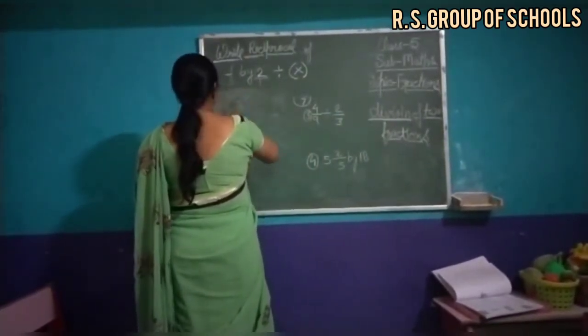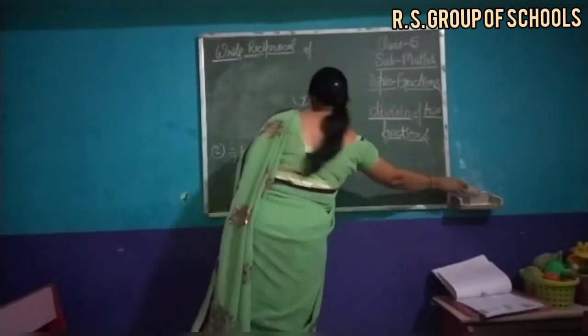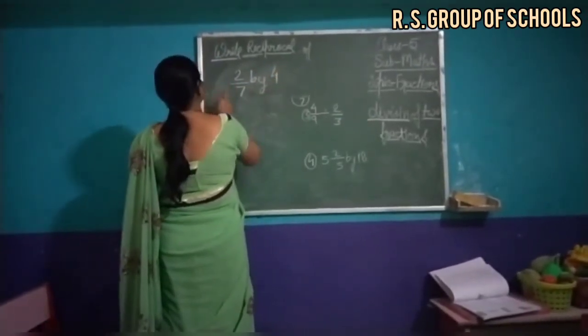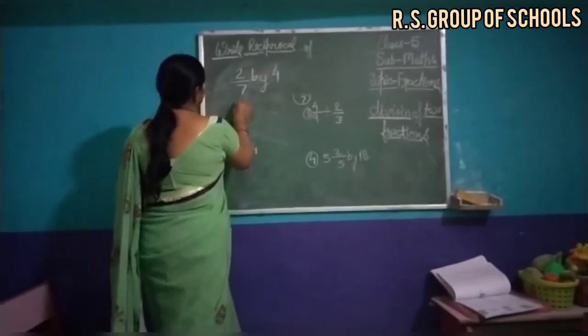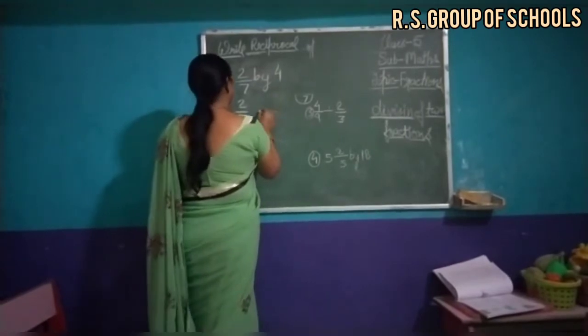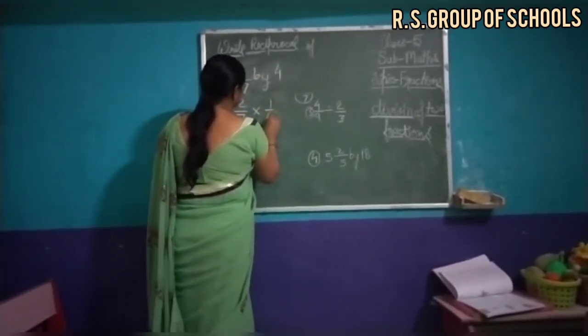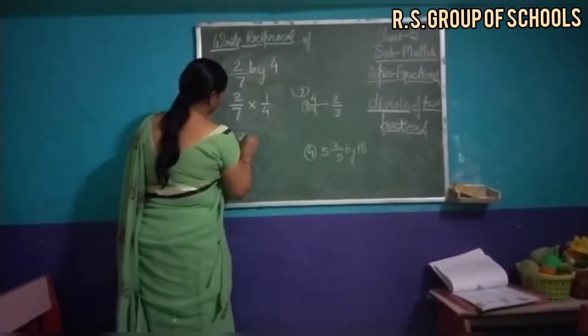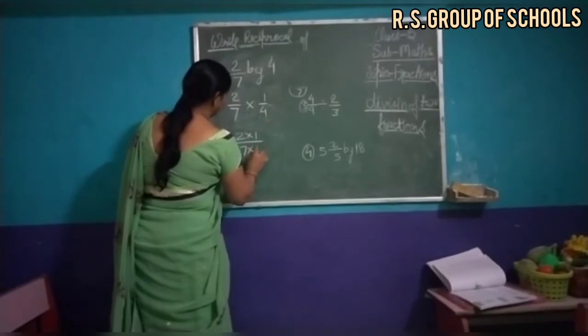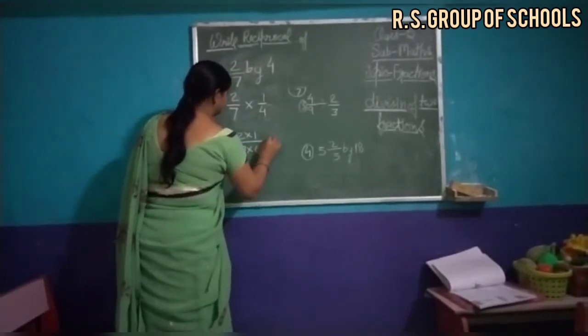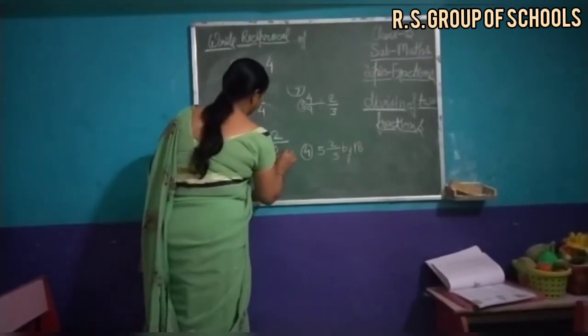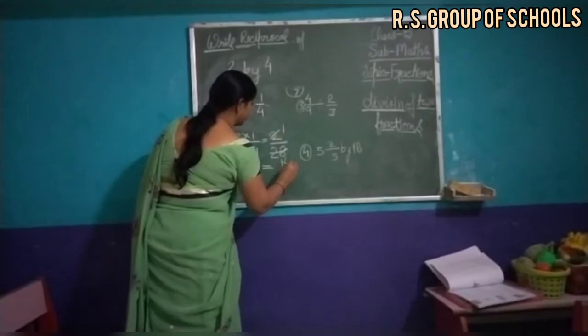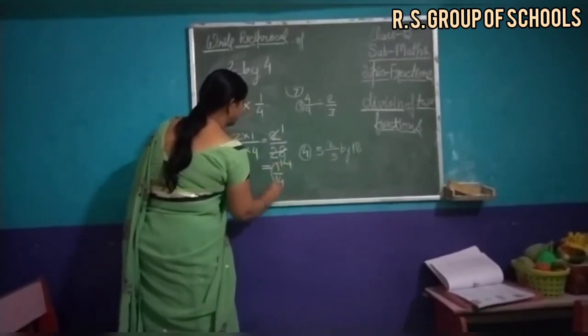Now the second one is 2 upon 7 by 4. Then again 4 को reciprocal करेंगे, 1 upon 4, and sign changes into multiply. 2 into 1, 7 into 4, 2 upon 28, or 1 upon 14. Answer is 1 upon 14.